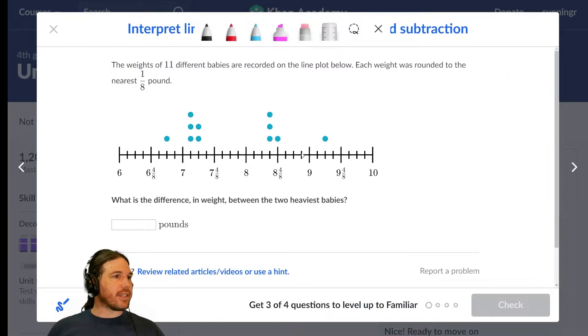The weights of 11 babies were recorded on the line plot below. Each weight was rounded to the nearest one eighth of a pound. What is the difference between the two heaviest babies? Okay, I think I can figure this out.